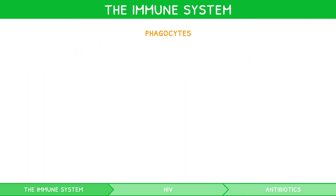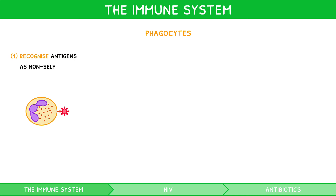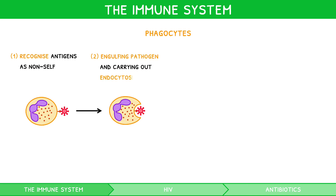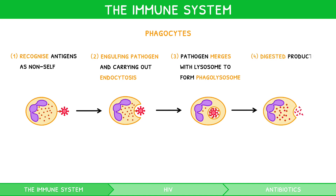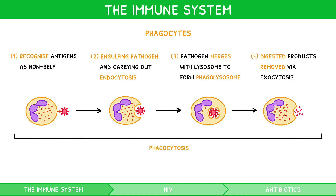Phagocytes, also called macrophages, recognise antigens on the surface of the pathogen and detect it as non-self. They then engulf the pathogen by surrounding it with pseudopods and carrying out endocytosis. Once ingested, the pathogen merges with a lysosome to form a structure known as a phagolysosome, where digestive enzymes break the pathogen down. The digested products are then removed by exocytosis. This process is known as phagocytosis and is described as innate, i.e. present from birth, and non-specific, as the response of a macrophage to any antigen is always phagocytosis.